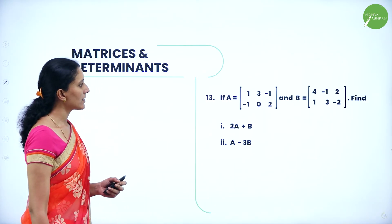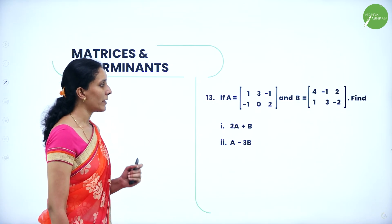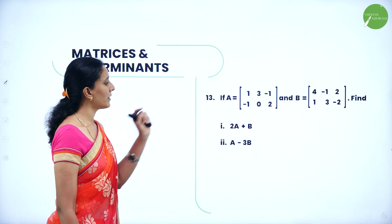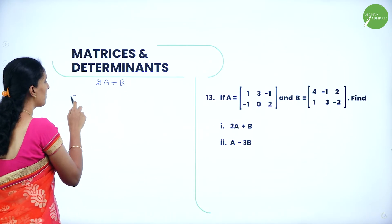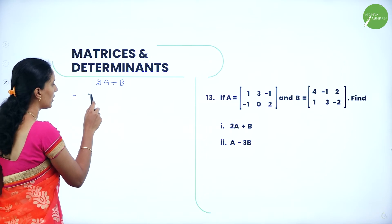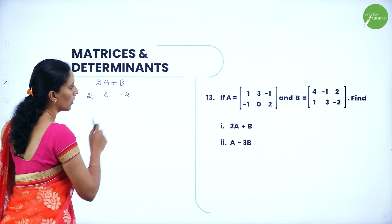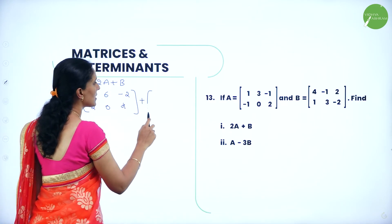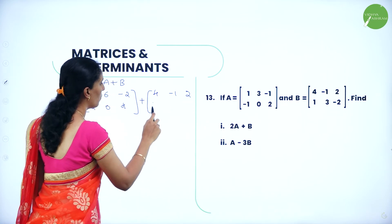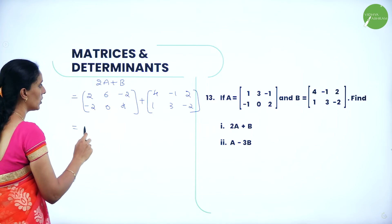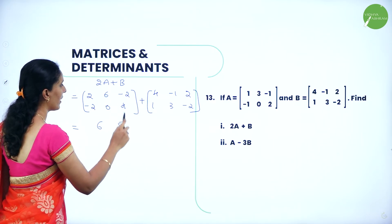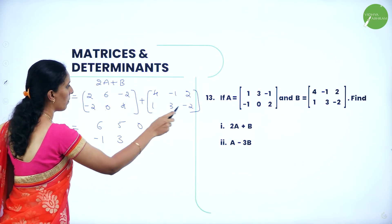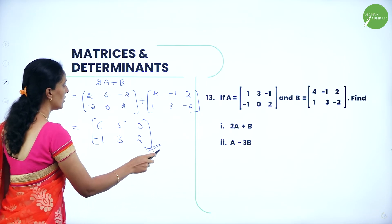Next question: find matrix A if 2A plus B = [2, 0; 1, -3], where B = [1, -1; 3, 0]. We have 2A + B = [2, 0; 1, -3]. So 2A = [2, 0; 1, -3] - [1, -1; 3, 0] = [2-1, 0-(-1); 1-3, -3-0] = [1, 1; -2, -3]. Therefore matrix A = [1/2, 1/2; -1, -3/2].